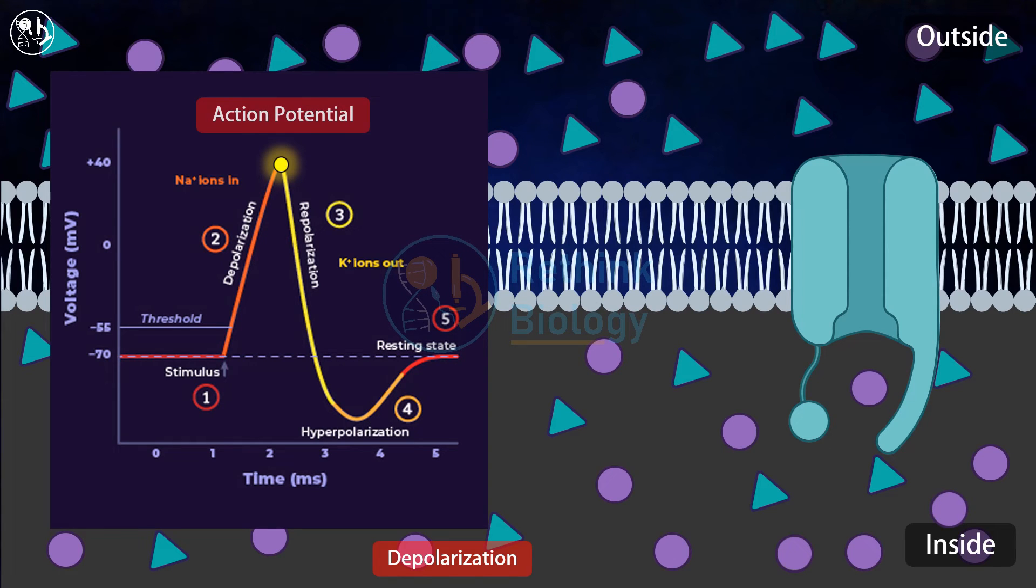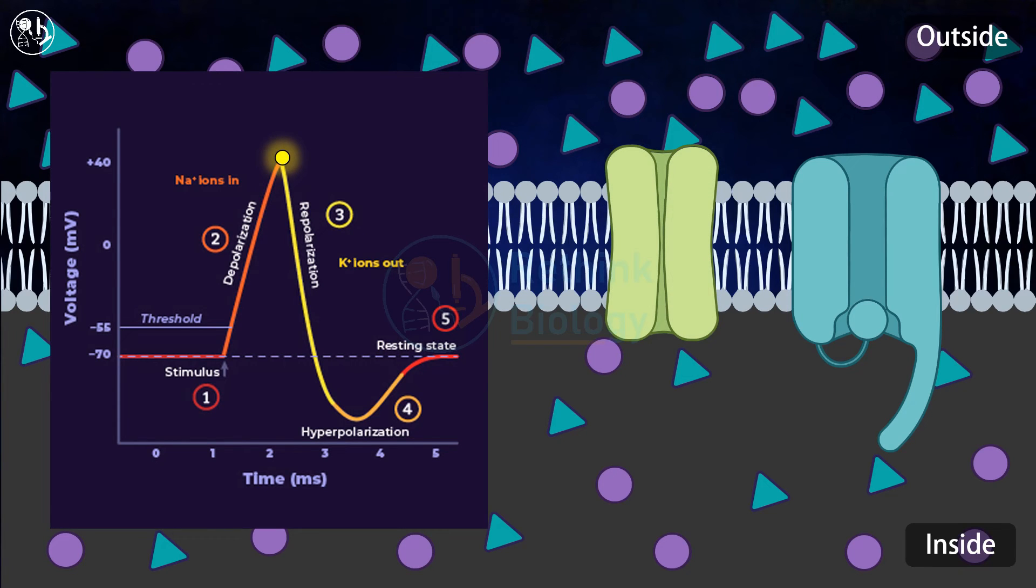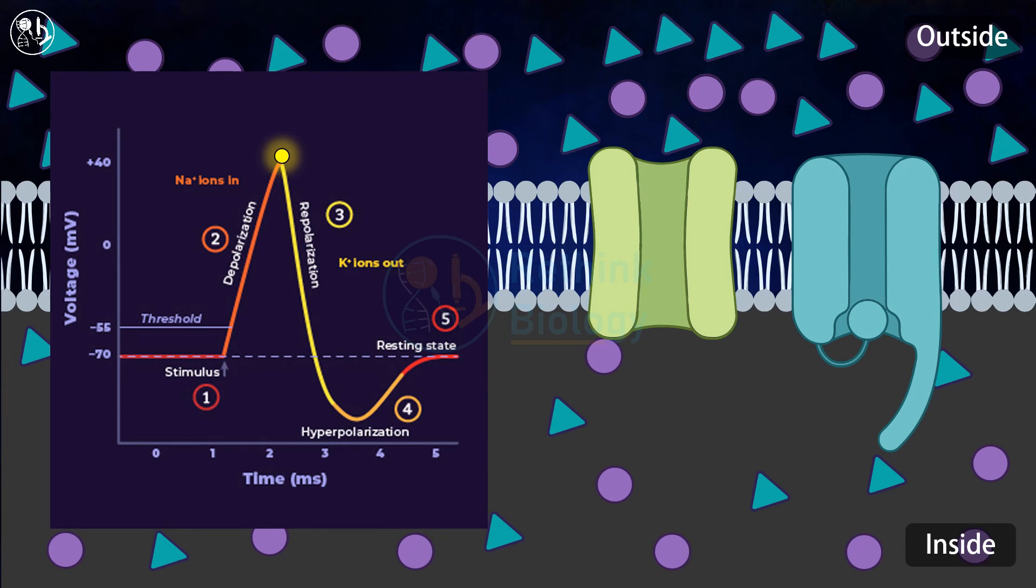The next stage is the falling phase of the action potential, or the repolarization stage. Within a few milliseconds after the membrane becomes highly permeable to sodium ions, the sodium channels begin to close and the potassium channels open. By permitting potassium ion outflow, it re-establishes the normal negative resting membrane potential again. This is called repolarization of the membrane.